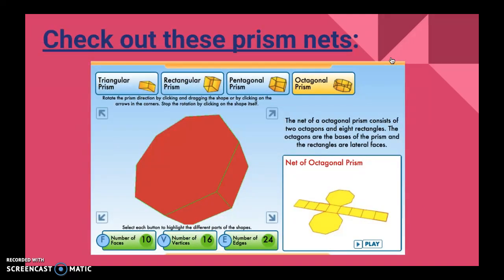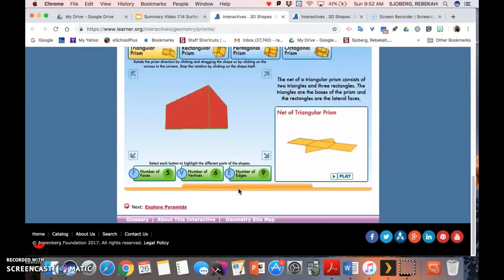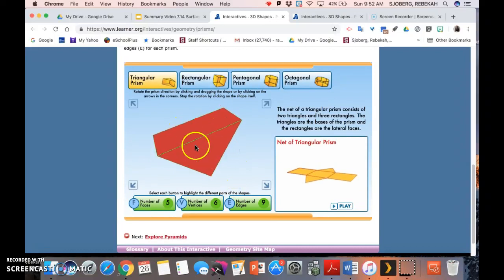We're going to look at some prism nets from Annenberg Media just to look at how these things compose and decompose. So right here you're going to see a triangular prism, and to the right we'll see a net. If I play this, you'll see how the net can fold up to make the triangular prism. When I unfold it, I want you to notice the shapes that are making up that net.